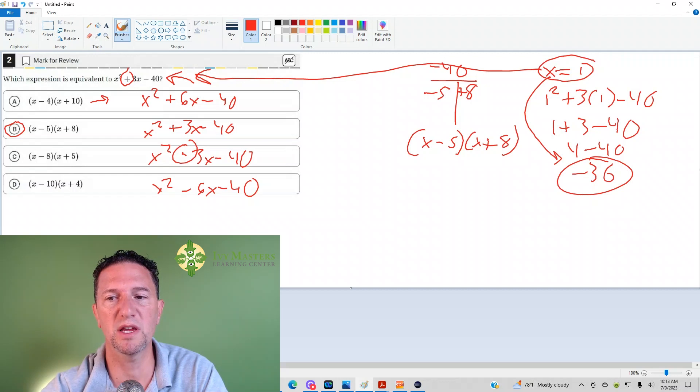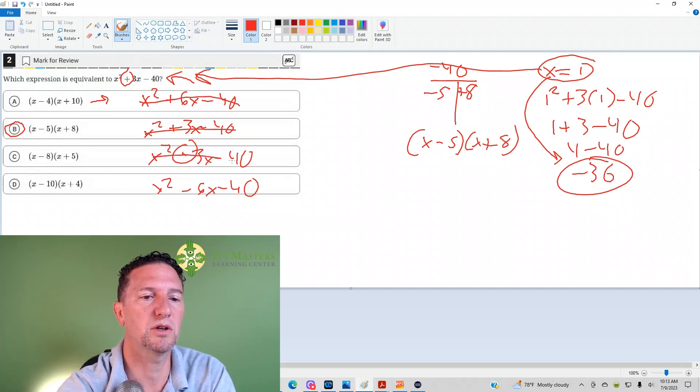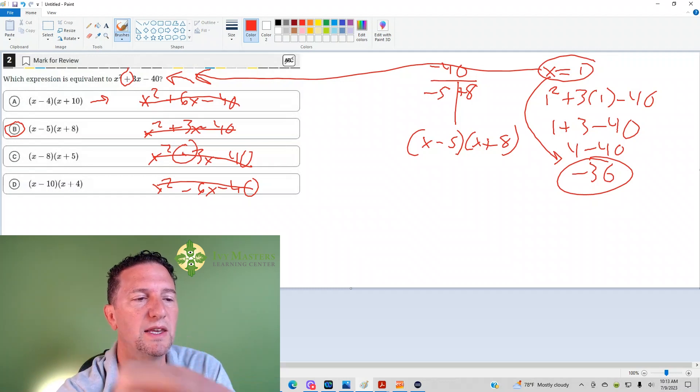Now, it makes logical sense. If I plug that, say 1, into each answer choice, I should get negative 36 if my answer is correct. So I'm going to cross these out because maybe we did this. If I plug 1 into the first one, I'd get 1 minus 4, which would be negative 3, then 1 plus 11, which would be positive 11. And I get negative 33. I need negative 36. That's wrong.